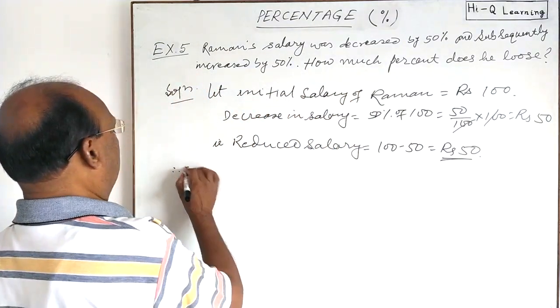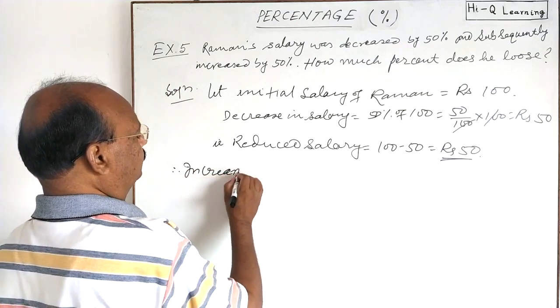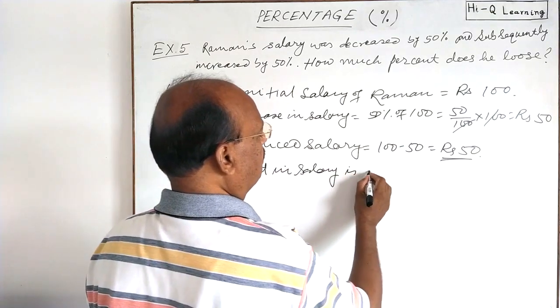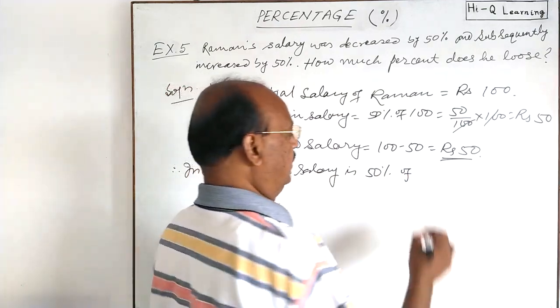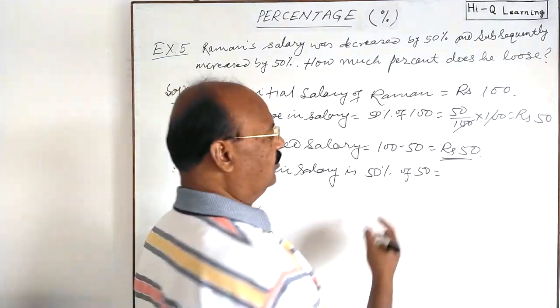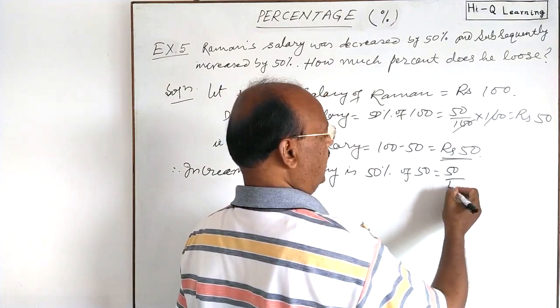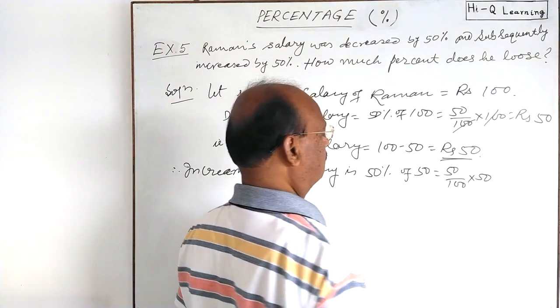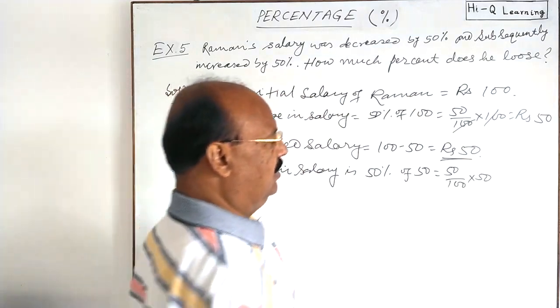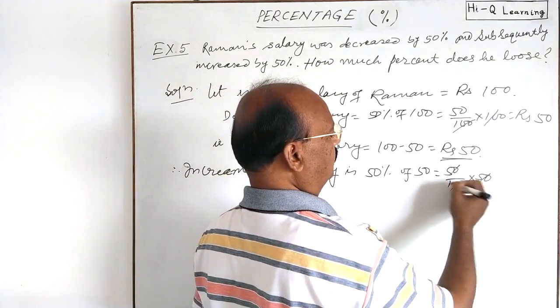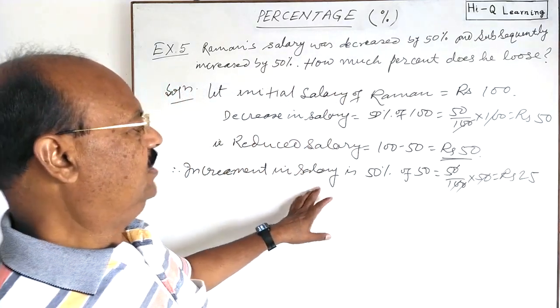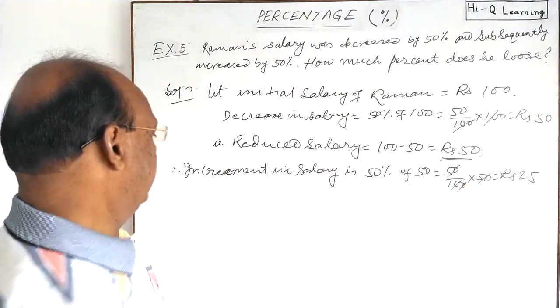So therefore, increment in salary is how much? 50 percent of this reduced salary of 50. And 50 percent of 50, you know, this is 25. We can calculate it easily. This is 50 percent, you write 50 divided by 100 into 50. So 50 percent of 50 will be, 0 will be cancelled out, 5 into 5 is rupees 25.